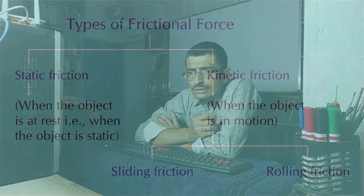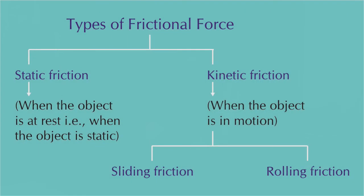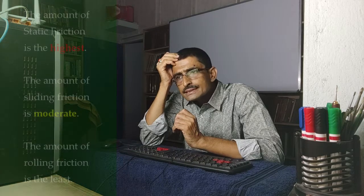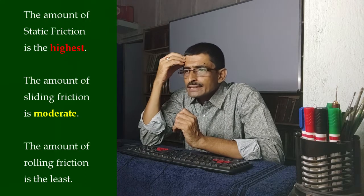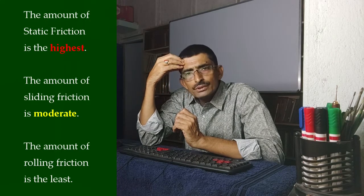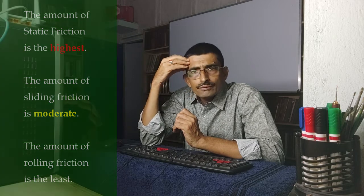We can prepare a chart to show the types of friction. Static friction is the highest of all three. The sliding frictional force is moderate, and the rolling friction is the least of all. We can prove by an experiment that sliding frictional force is greater than rolling frictional force. Please allow me some time to prepare another exclusive video on it.